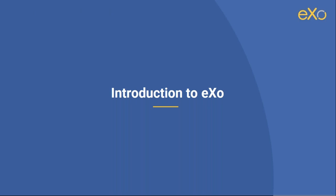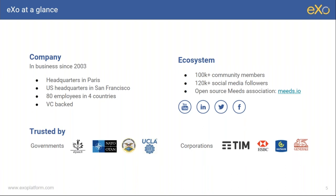Just a quick word on EXO before we start for those who don't know us yet. EXO is a software editor company founded in 2003 in San Francisco, though today we are headquartered in Paris, primarily in Europe. We have four offices around the globe — San Francisco, Paris, Tunisia in North Africa, and Belgium — and employ around 80 employees. We have over 100,000 community members in our online community and are trusted by organizations in the public government sector, private sector, finance, and banking.